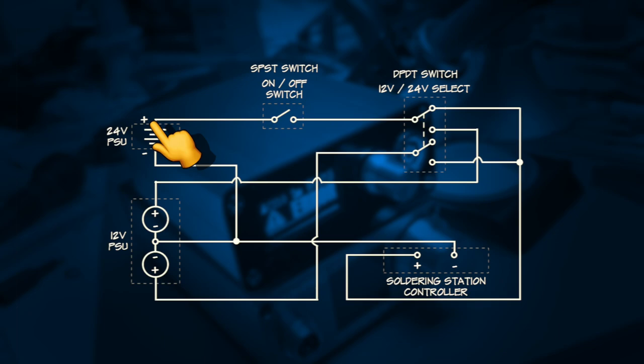To recap on the wiring, the positive output from the 24V external power supply goes to an on-off switch, which then goes to a common leg on a double pole double throw switch. One of the output legs then goes to the positive input on the soldering station controller. The other output pin goes to the positive input pin of the internal 12V power supply. The positive output of the 12V internal power supply then goes to the other common pin on a double pole double throw switch. The output that is closed when the 24V is going to the 24V power supply also connects to the positive input on the soldering station. All negative terminals are then connected to the negative output terminal of the 24V power supply.